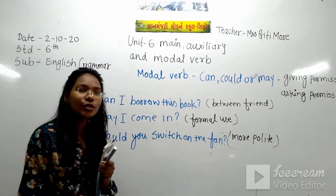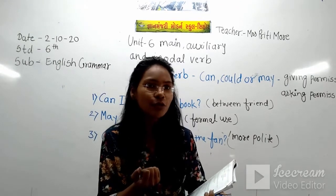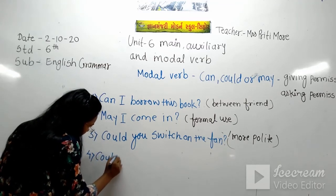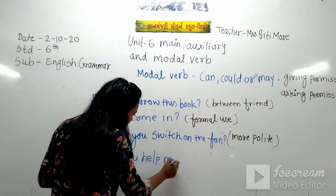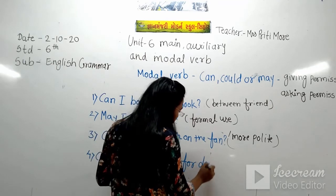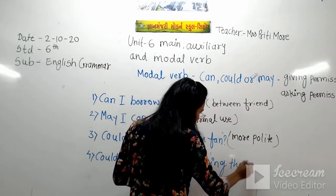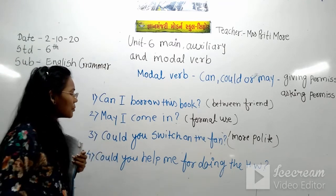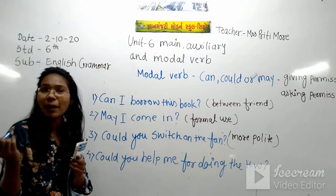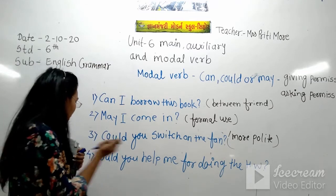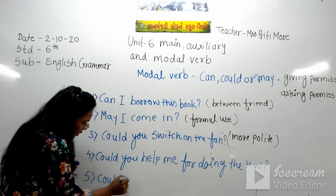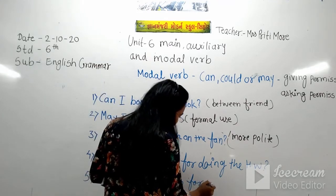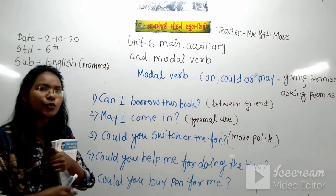For polite requests we use could. Examples: 'Could you do this for me?' 'Could you switch on the fan?' 'Could you help me?' 'Could you buy the paint for me when you go to the market?' Many polite requests can be made using could.